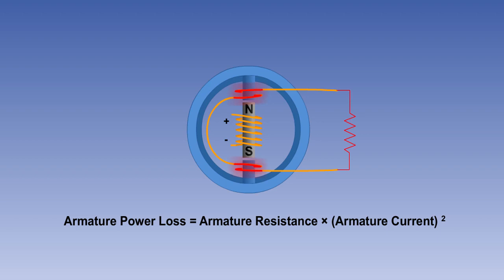This power loss heats up the conductors and can, in extreme cases, destroy the insulation of the windings. For this reason, AC generators are rated in terms of this armature current, as well as by their voltage output.